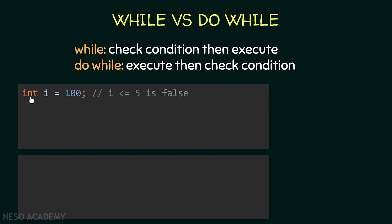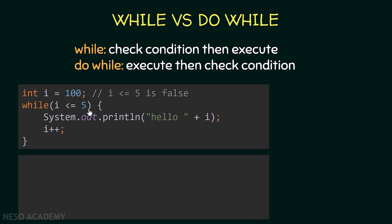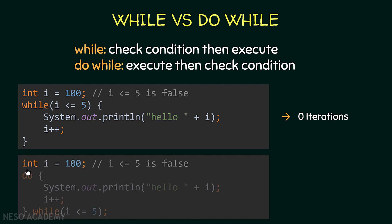Consider this code: I'm initializing variable i to 100. If the condition is i less than or equal to 5, this is false. With a while loop, we check the condition first — is 100 less than or equal to 5? No, it's false — so the body is never executed: zero iterations. But with a do-while loop, we execute the first iteration regardless, print hello 100, then increment i to 101. Is 101 less than or equal to 5? No — so we stop. But in this case we had one iteration. So a do-while loop is executed at least one time.